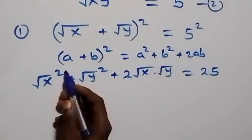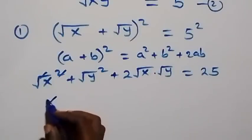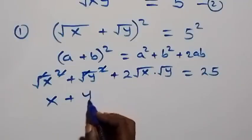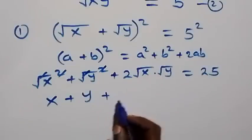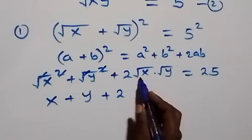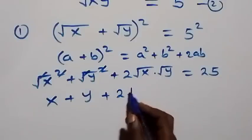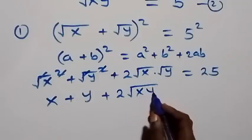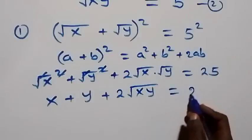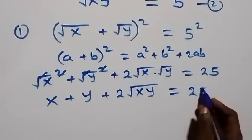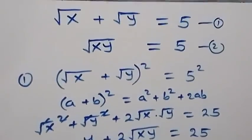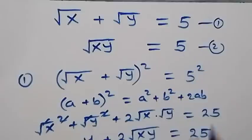The squares cancel the square roots, so we have x + y + 2·√(xy) = 25. Then from equation two, √(xy) is given to be equal to 5.